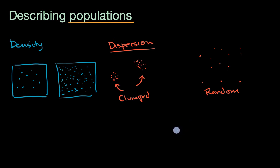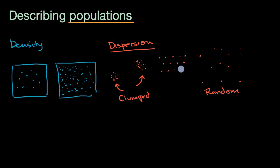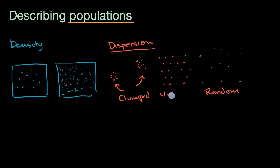Then there's uniform dispersion, where the members of the population are reasonably uniform in how they are separated — roughly the same distance apart. It's very rarely exactly uniform, but the distribution might be closer to uniform.